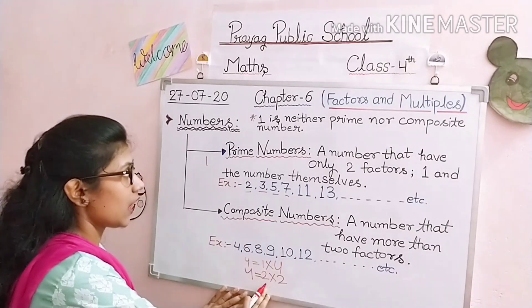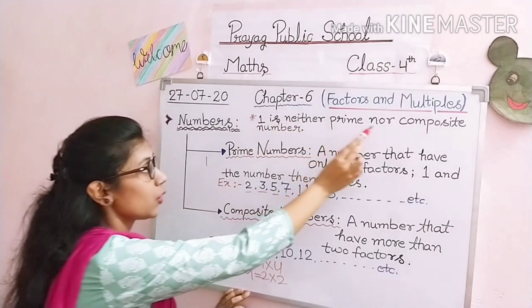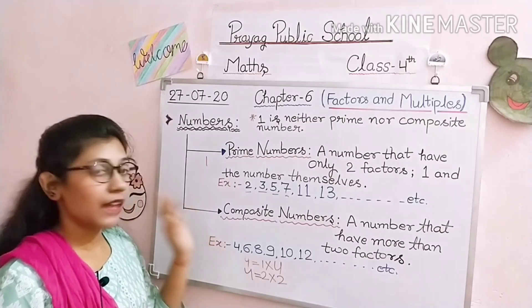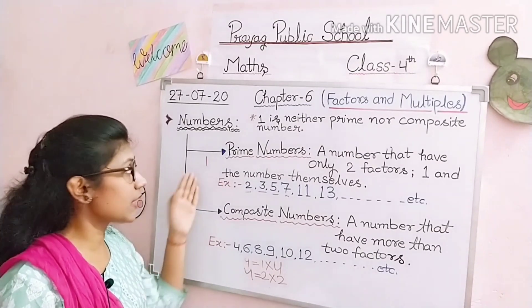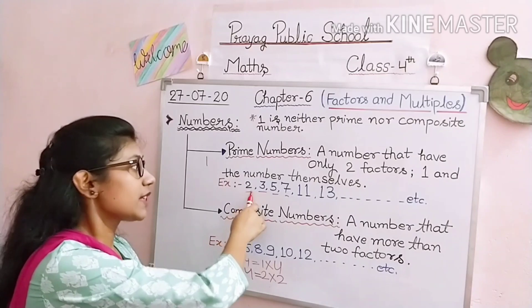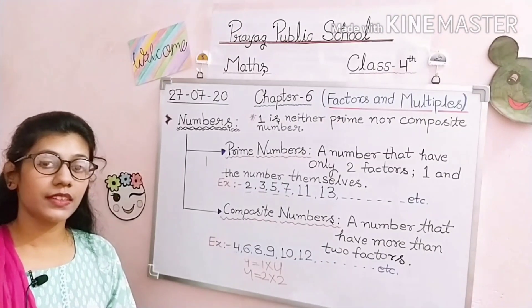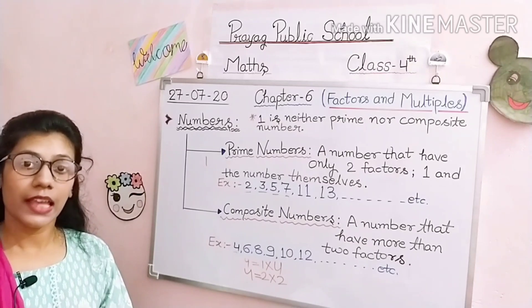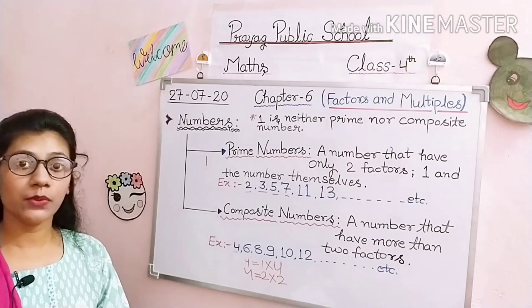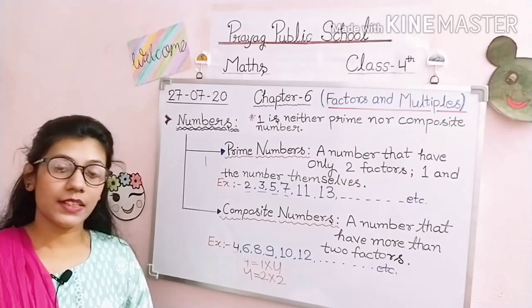An important point: 1 is neither a prime number nor a composite number. It belongs to neither category. So the smallest prime number is 2, because 1 is neither prime nor composite. So students, that's all for today. We covered two topics: LCM (Lowest Common Multiple) and prime and composite numbers. You have to do the given sums in your homework copy and the fill-in-the-blanks in your book. Thank you.